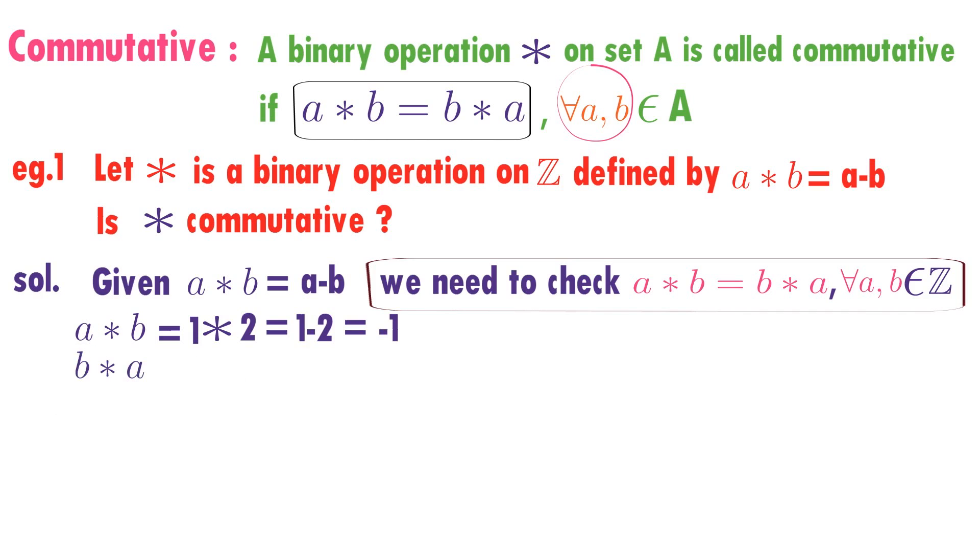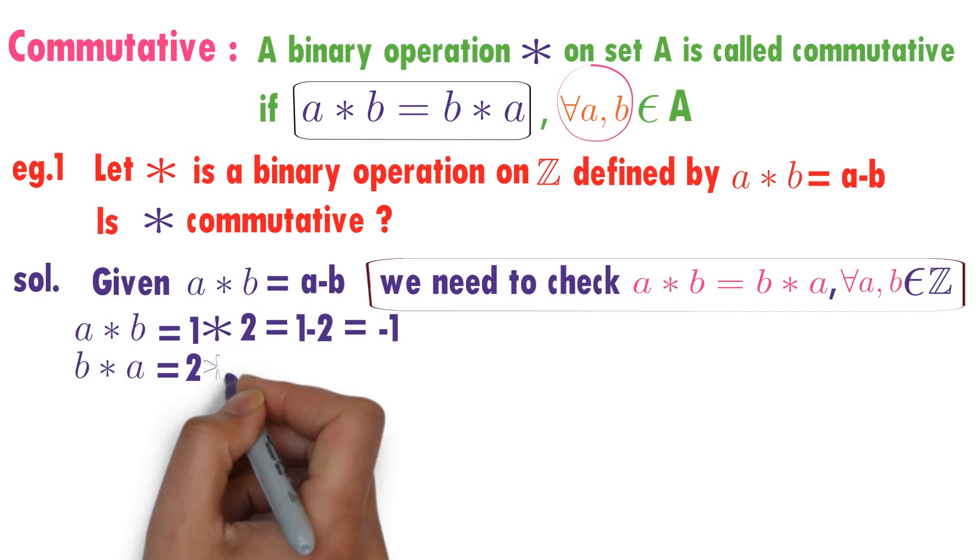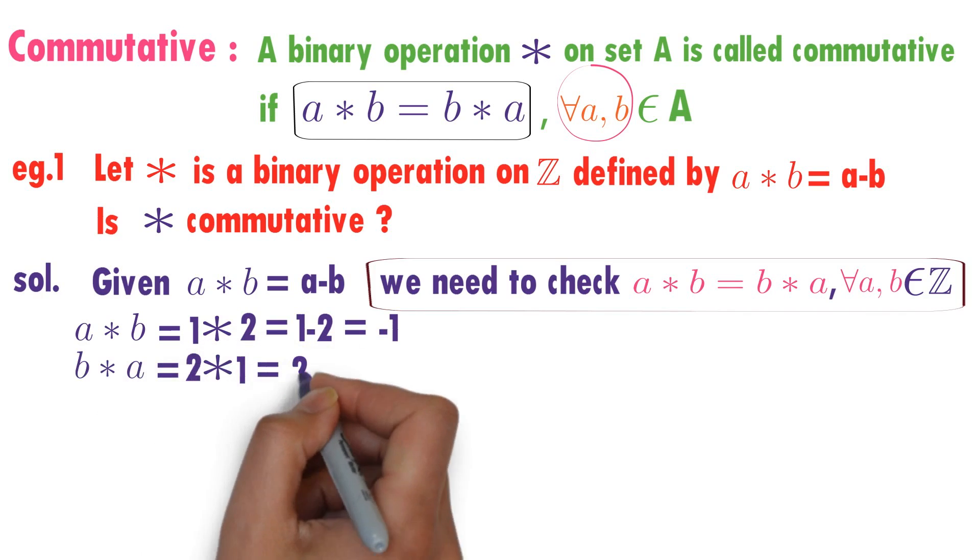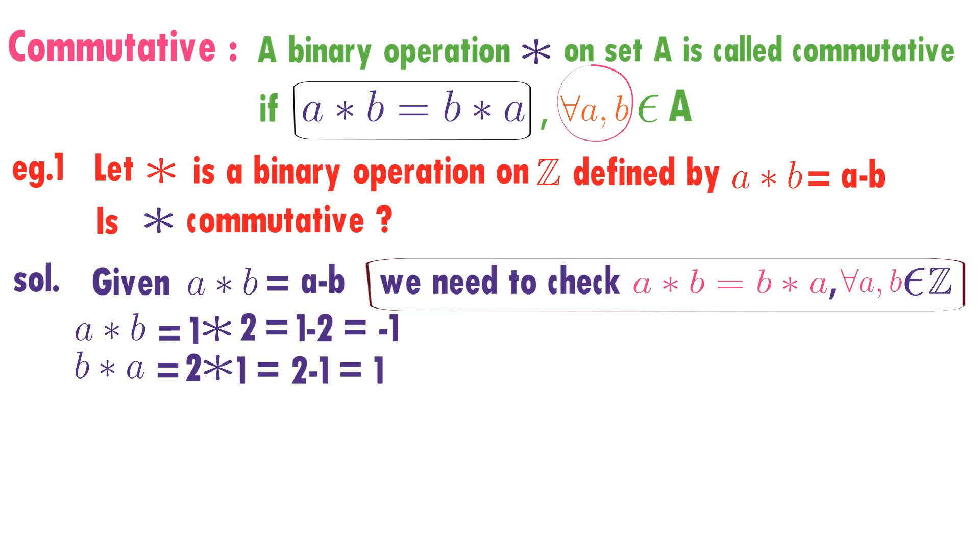Similarly, I will calculate B star A. What is B star A? It is 2 star 1. Try to understand: A star B is 1 star 2, B star A is 2 star 1. 2 minus 1 is 1. Observe here,